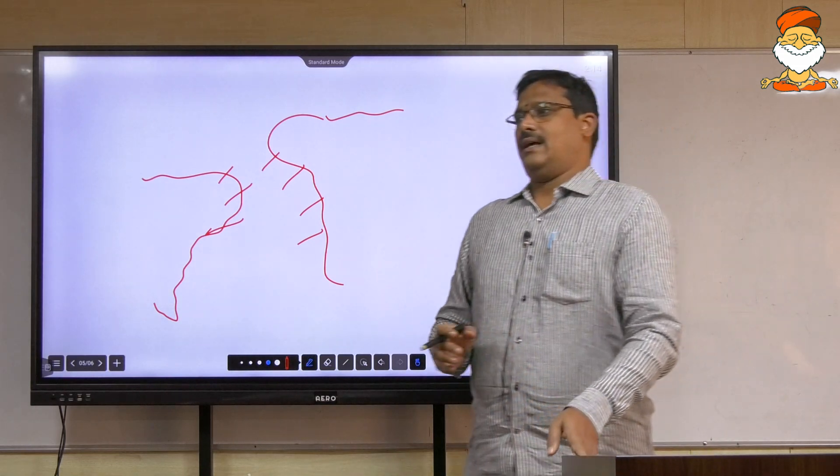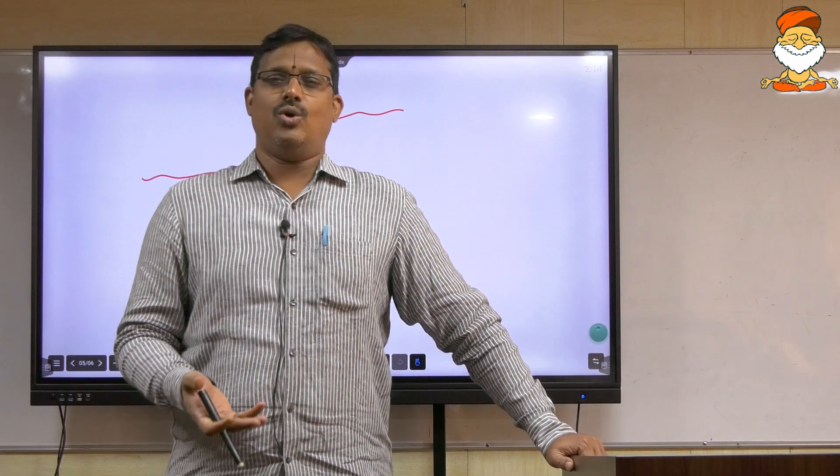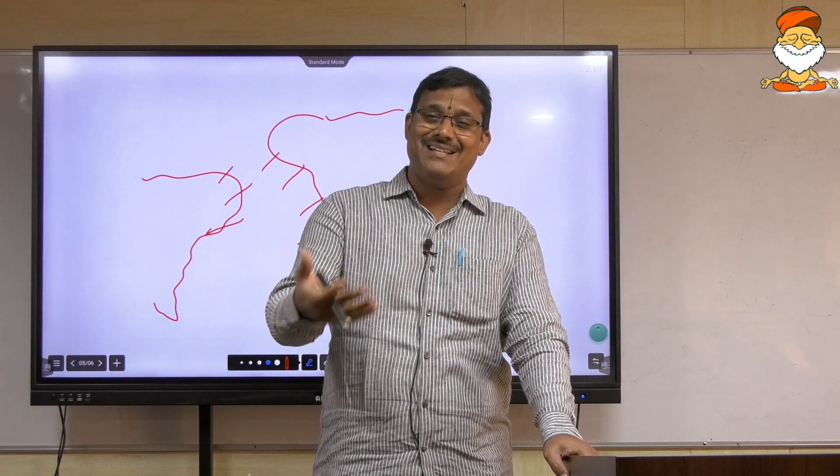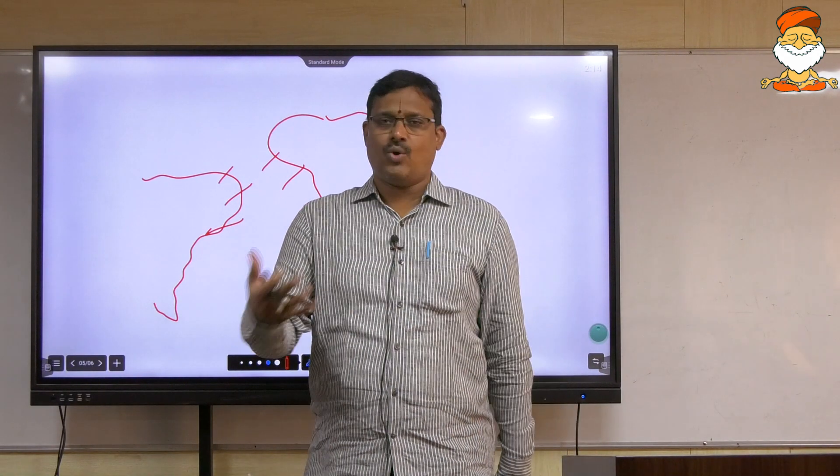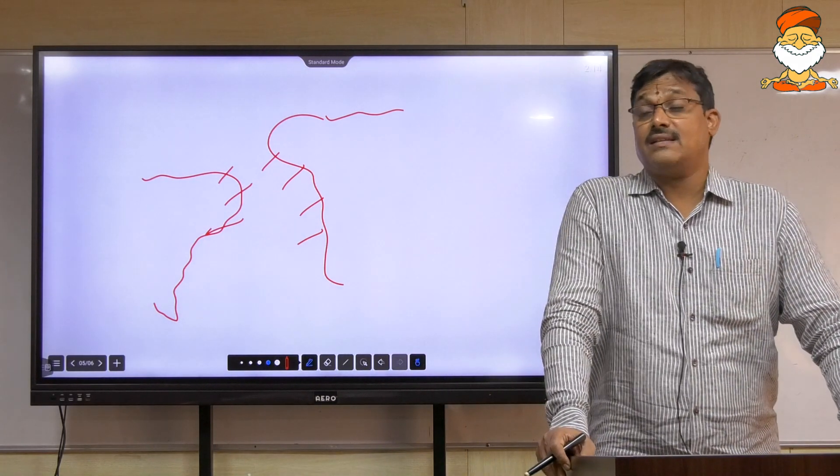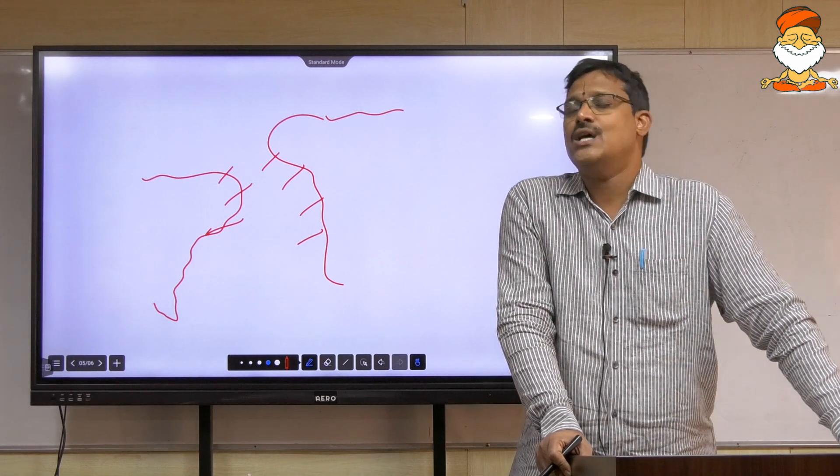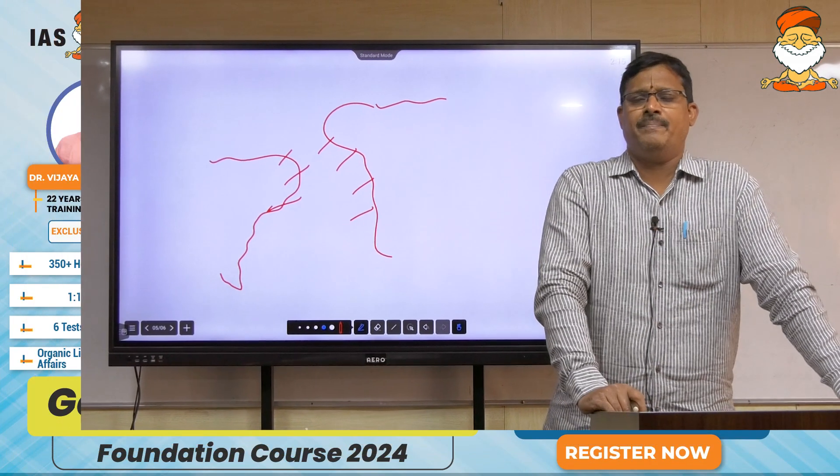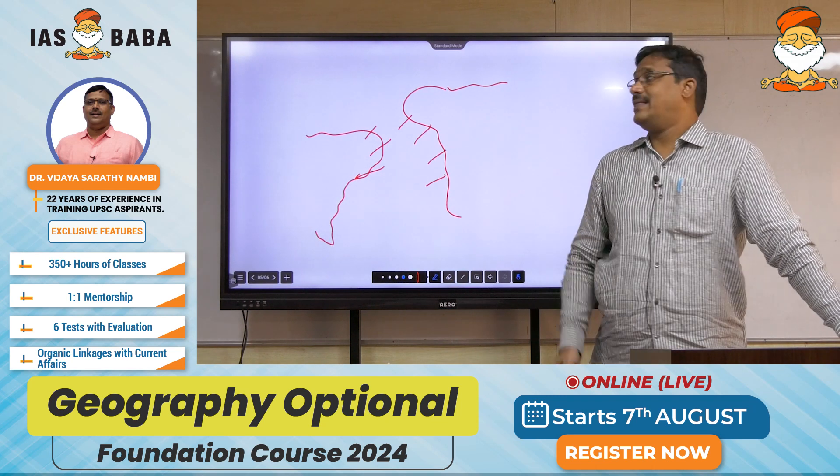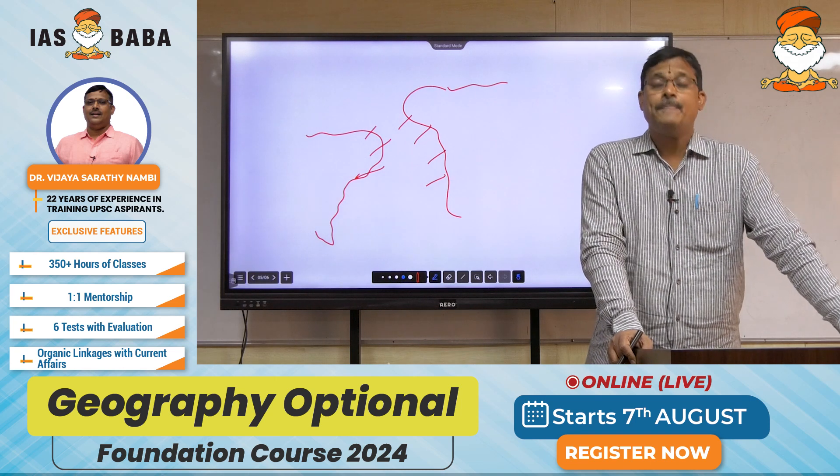Now, a scientific theory just cannot go ahead with imaginations. So, based on this, now he started further finding out, trying to find out evidences, which he could fortunately find, because he was good at, as I said in the beginning only, he was trying to help Koppen in finding fossiliferous evidences. The same fossiliferous evidences have also helped him in understanding, or rather coming out with this theory that right now we are talking about that is continental drift theory.